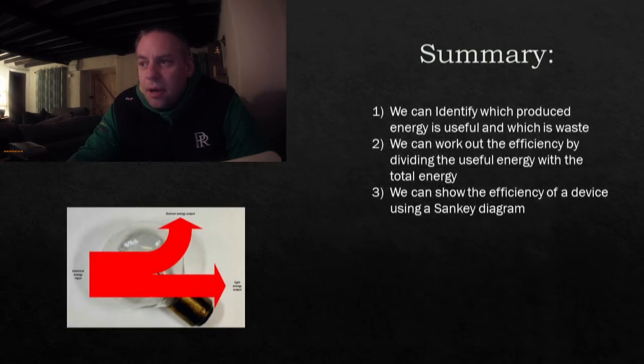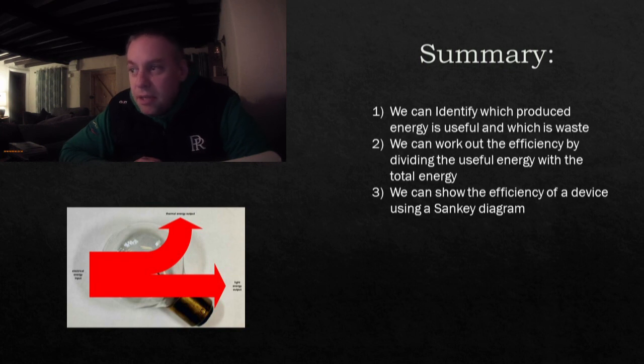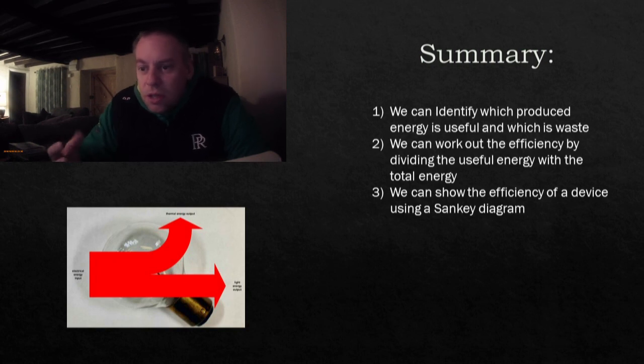So let's summarize. Energy efficiency is something we can use to judge a device, and we can use that to work out how much useful energy is produced for that device when compared with the energy input. The equation for working out efficiency is you take the useful energy and you divide it by the total, times it by 100 to give you a percentage. We can demonstrate those and show those efficiencies by using Sankey diagrams.